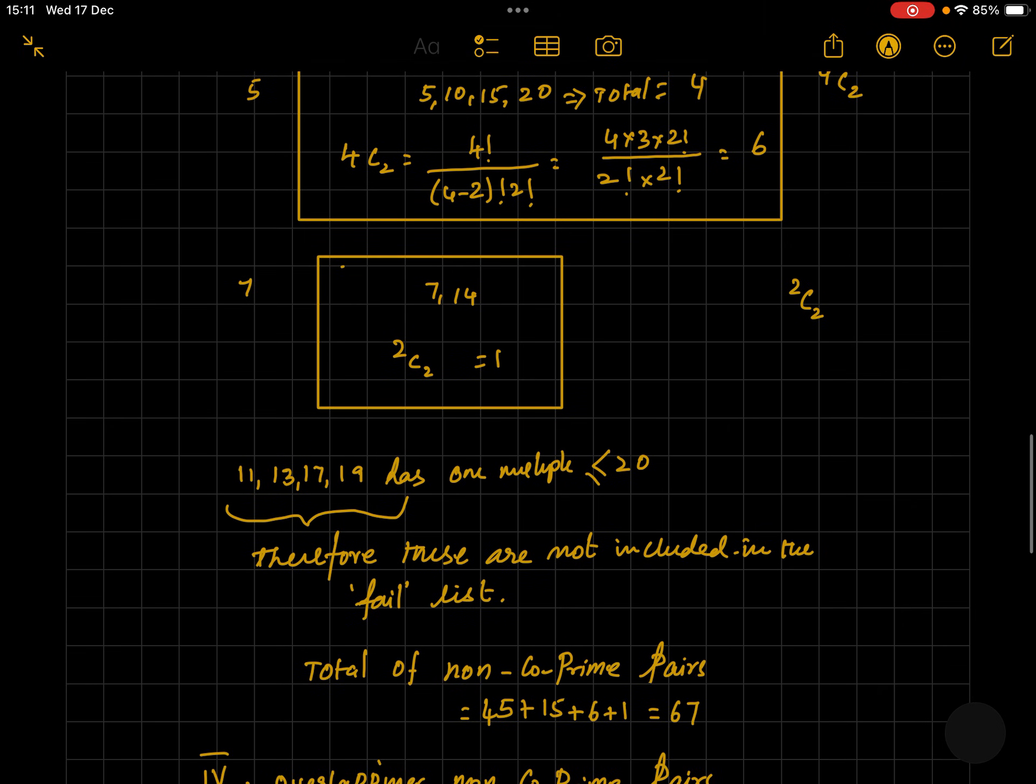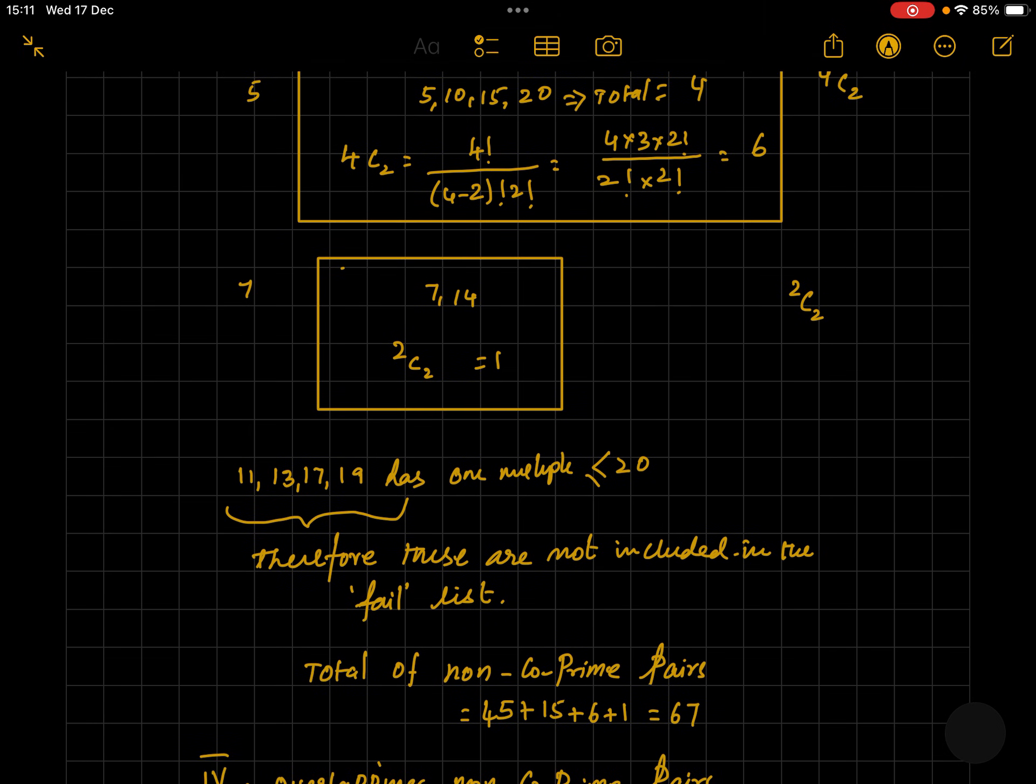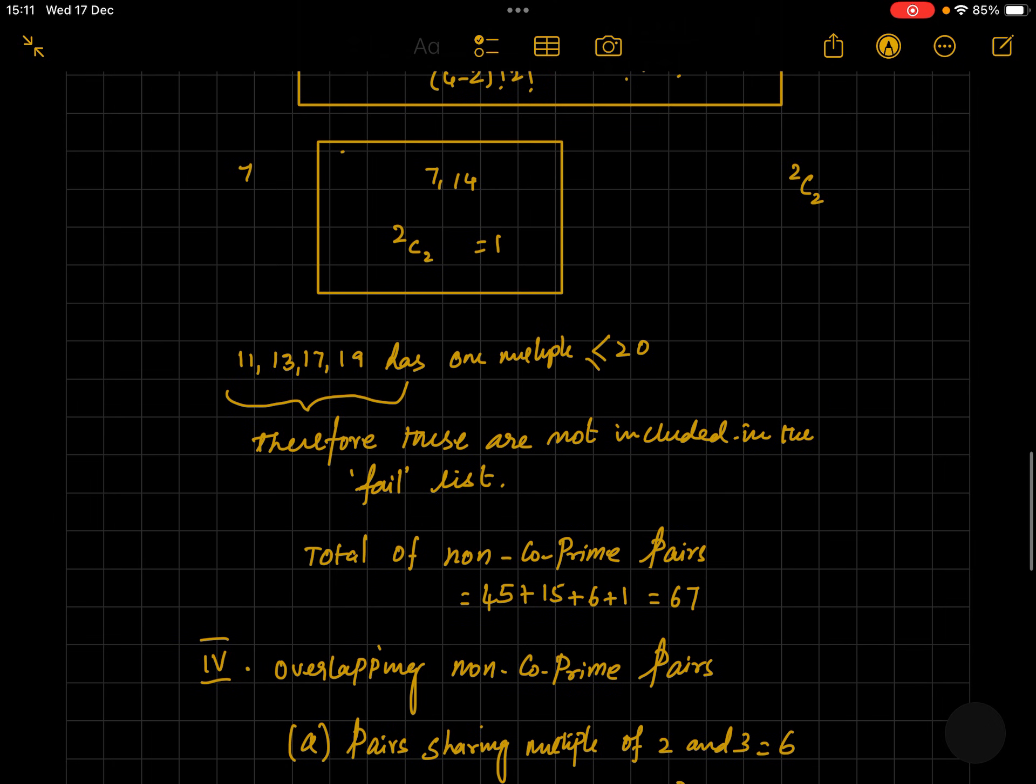For 11, 13, 17, and 19, even the very first multiple will be more than 20. Therefore, we are not going to include them in the fail test because they cannot make any pair. They will be standalone, so we are not going to include them in the fail list.